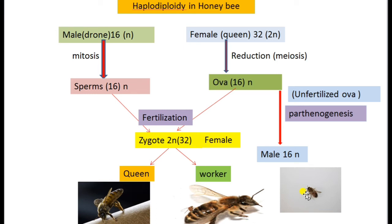Drones do not have a father because they are developed from unfertilized ova — they have only a mother. However, they do have a grandfather: the father of the female queen becomes the grandfather of the male bee. Also, these males do not produce sons, but they do have grandsons, because the sperms from drones fertilize ova to produce only females. So males do not possess a father and do not produce sons, but they do have a grandfather and grandsons.